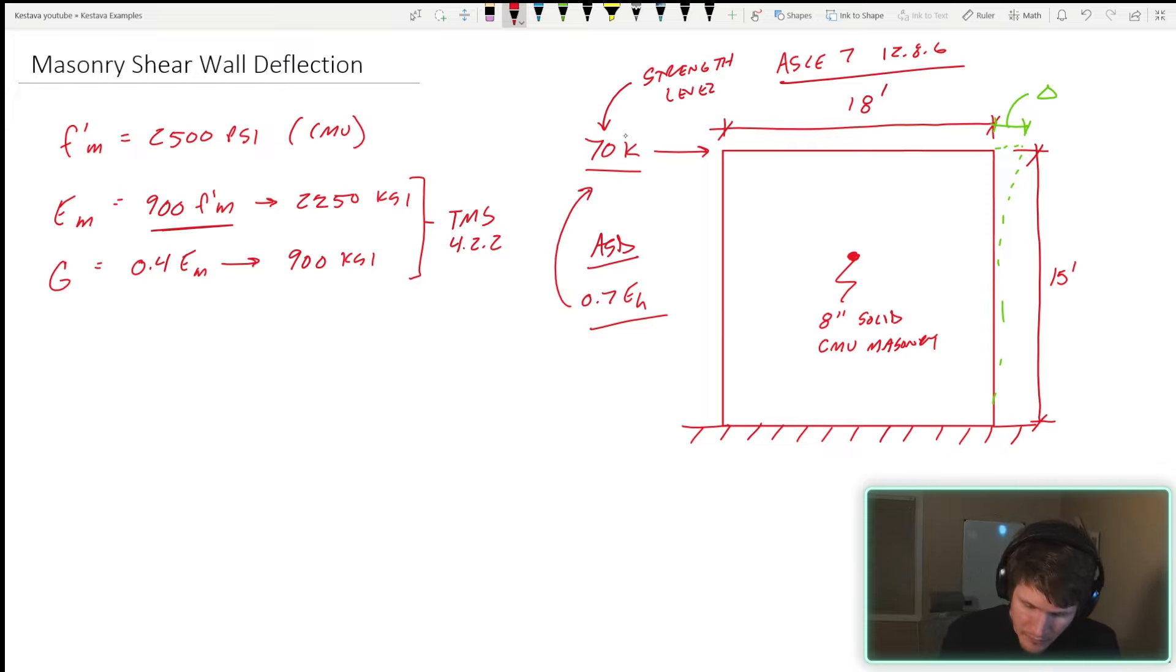What that would mean is, keeping all things seismic, if we were designing for ASD where the load combo would be 0.7 E sub H, when you're doing your drift check you would need to divide out the 0.7 from your force and jack up your forces to get them to strength level of 1.0 E. We are going to assume today that 70 kips already went through that process, it's already strength level and a rho of 1.0 and we're good to go.